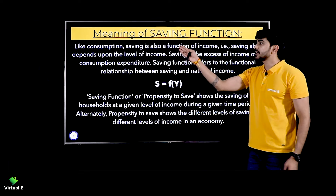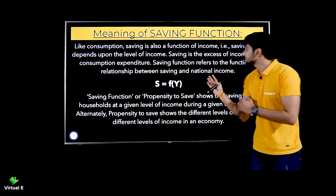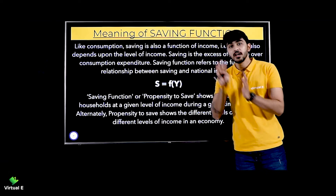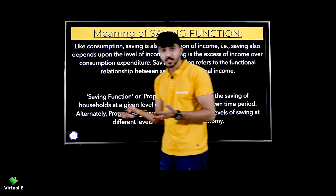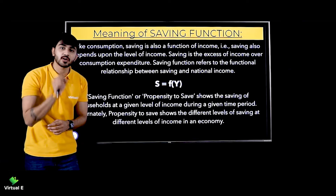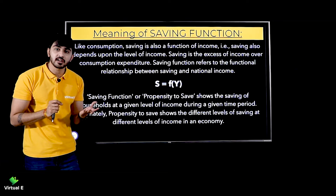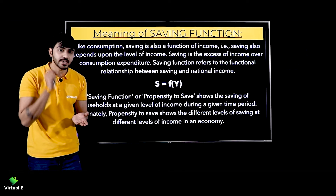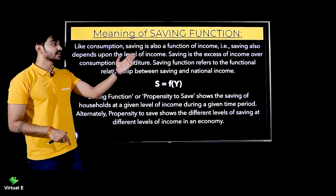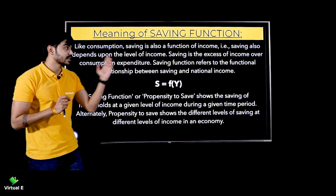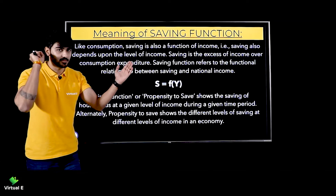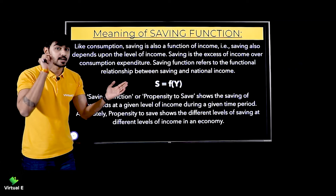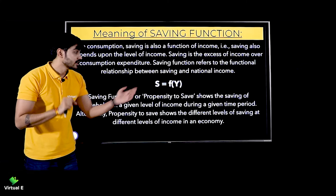Saving is also a function of income — that means saving also depends on the level of income. Our consumption definitely depends on our level of income, and our savings also depends on it, because savings is equal to income minus consumption. For example, if your income is 100 rupees and you consume 80 rupees, then 100 minus 80 gives you 20 — that is your savings. Saving is the excess of income over consumption expenditure, so saving equals income minus consumption, i.e., S = Y - C.